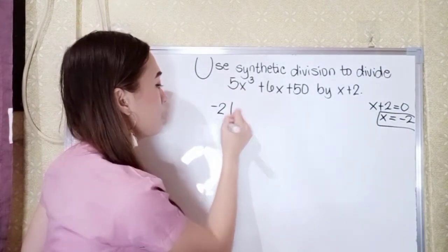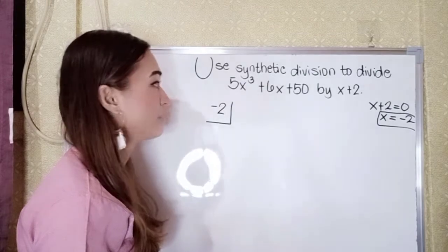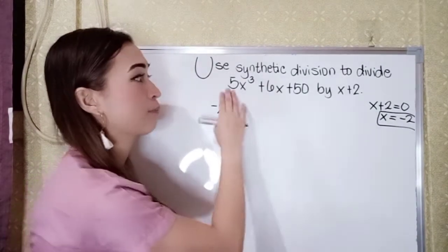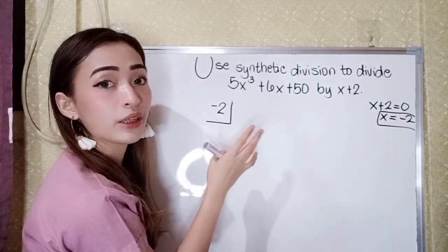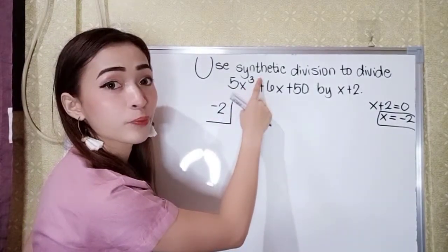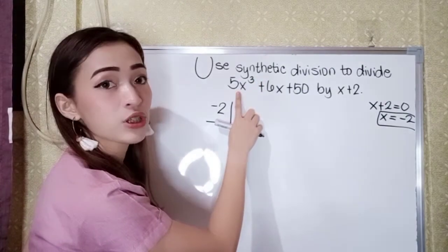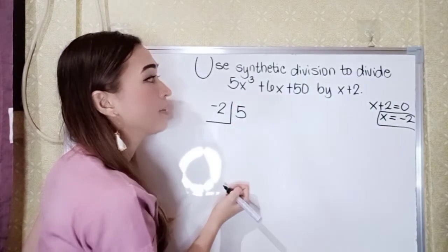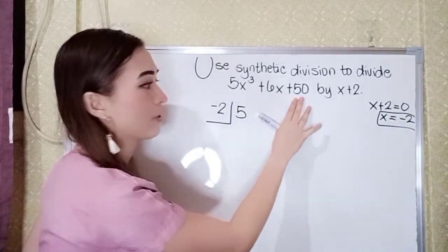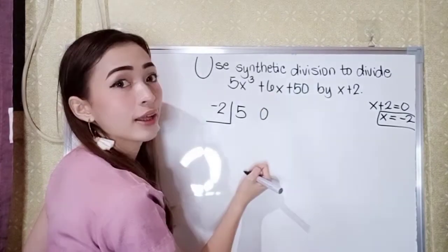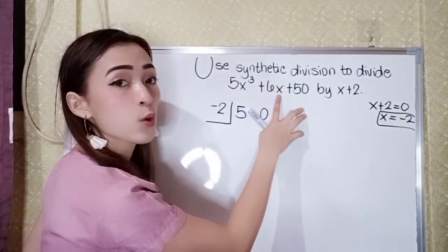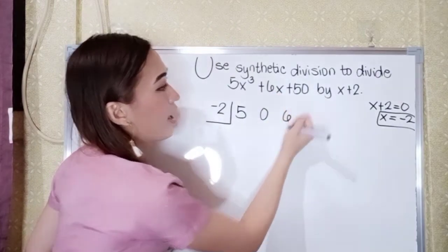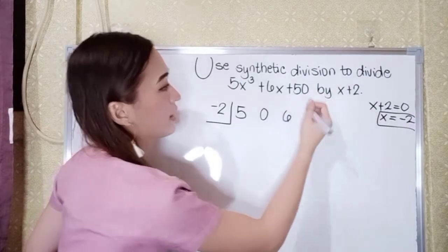Now let's set up the synthetic division. We need to get the numerical coefficients of our polynomial. The highest exponent is x cubed, so the coefficient of x cubed is 5. Since we don't have x squared, that is 0. Our coefficient of x is 6, and our constant is 50.